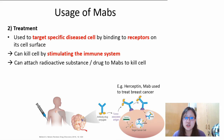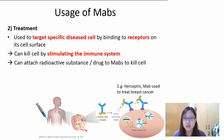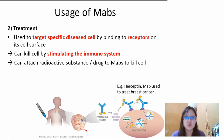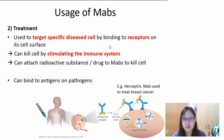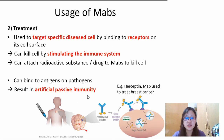Other than that, you can actually attach radioactive substances or drugs to MABs to kill the cell. The antibody with the drug attached can be used to treat certain cancers or certain cells. MABs can also bind to antigens on pathogens, resulting in artificial passive immunity, as we learned in the last video.